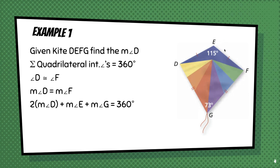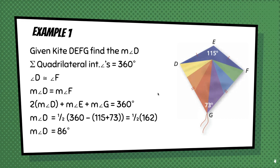So now we can substitute in these values for this and this. And we can divide both sides of this by two so that we get measure of angle D by itself. And with a little arithmetic, we find out that the measure of angle D is equal to 86 degrees.